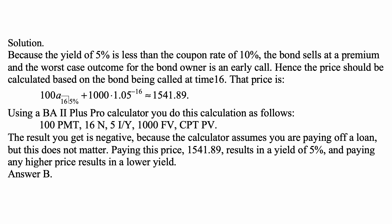Hence, the price should be calculated based on the bond being called at time 16, the earliest possible call. That price is 100 times A-angle-16 at 5% plus 1000 times 1.05 to the negative 16, which is approximately 1541.89.